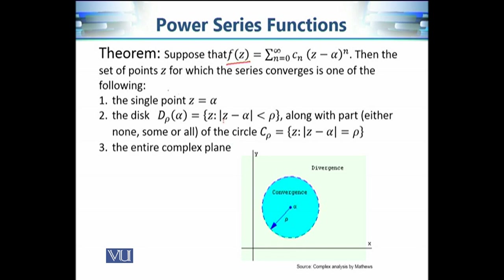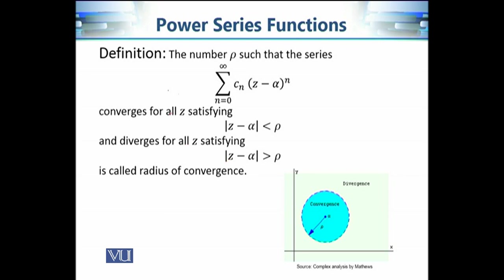So given any power series function, its domain has three possibilities: a single point, a disk — where we don't know whether some or all of the boundary is included — or the entire complex plane. The number rho such that the series converges for all Z satisfying the modulus of (Z minus alpha) less than rho, and diverges for all Z satisfying the modulus greater than rho, is called the radius of convergence. This rho defines the disk of convergence.